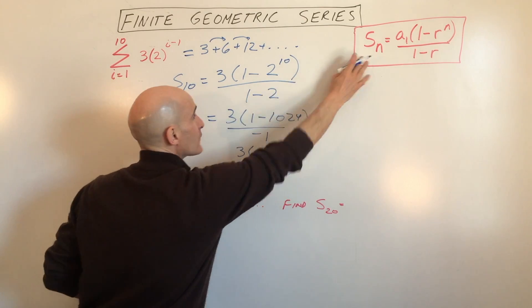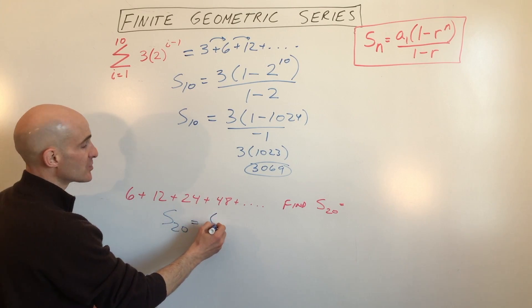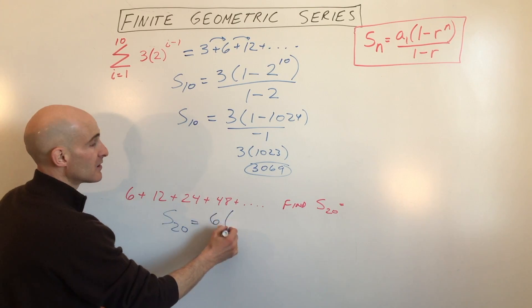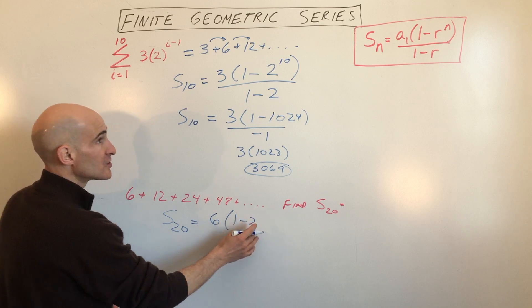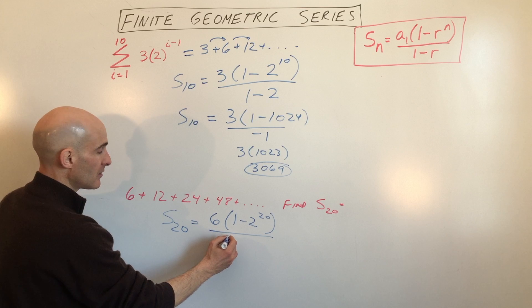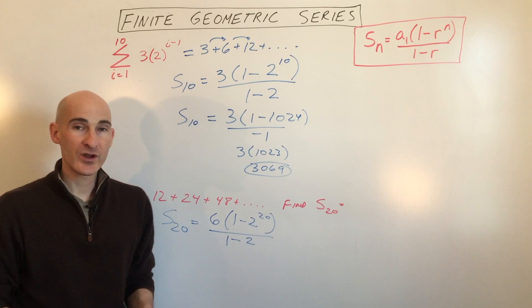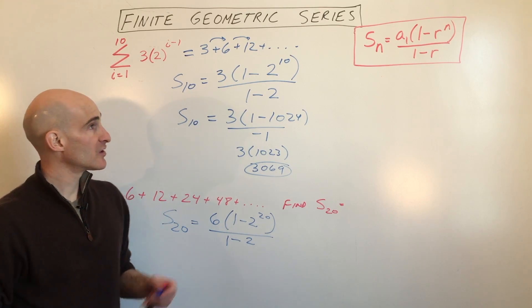But the same idea, we're going to use this formula. It's S sub 20 equals the first term, which is 6, times 1 minus the ratio, which is 2 to the 20th power, all divided by 1 minus the ratio, which is 2. And you just have to, again, use the order of operations to simplify that, and you'll get the sum.